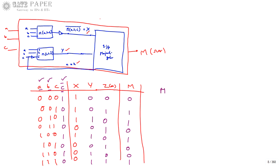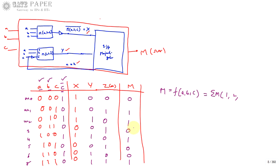Continuing: row 100: x=1,y=1,z=0 → m=1. Row 101: x=0,y=0,z=1 → m=0. Row 110: x=0,y=1,z=0 → m=0. Row 111: x=0,y=1,z=1 → two 1s → m=1. So the output m as a function of a,b,c gives minterms at positions: Σm(1,2,4,7).